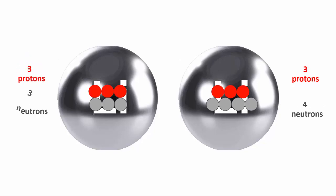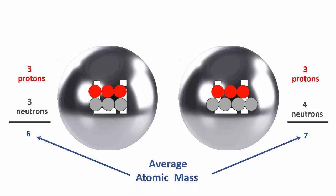The atom with three protons and three neutrons weighs 6 on the atomic mass scale. The atom with three protons and four neutrons weighs 7. This means that the average atomic mass is somewhere between 6 and 7. That's why it's 6.9.